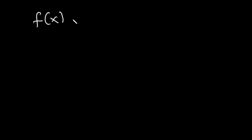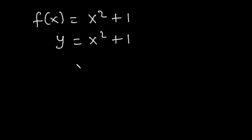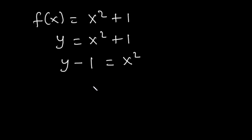Let's take another example. How do we find the range of the function f of x is equal to x squared plus 1? Let's replace f of x with y, so y is equal to x squared plus 1. Then let's make x the subject. To do that, we transpose 1 to the left-hand side, so we have y minus 1 is equal to x squared. And because we want to remove the exponent, we need to introduce a square root.